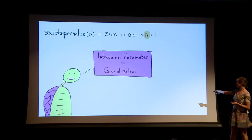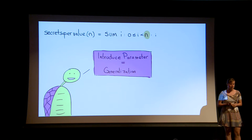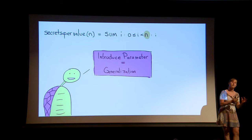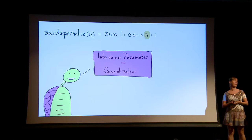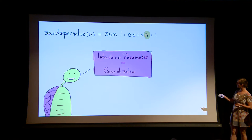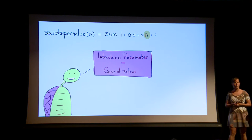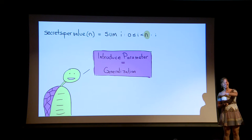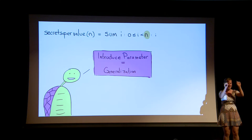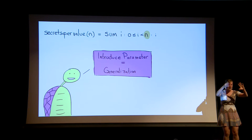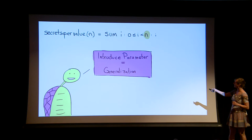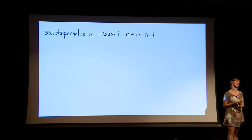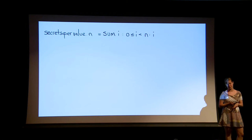So 'introduce parameter' is actually secretly a program derivation technique called generalization — you go from a constant to a variable in your program. Nothing to be scared about. One thing: instead of using brackets — I know they are like hugs, that's totally fine — I'm really bad at drawing parentheses. So instead of using brackets, I will use a dot for function application because I'm too lazy to mess with my slides. I hope that's not too confusing to anyone.